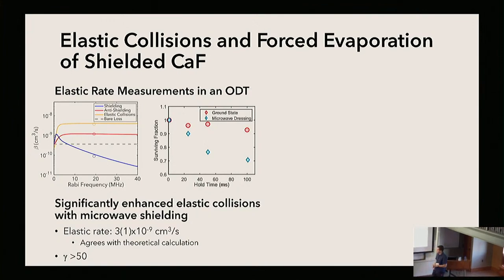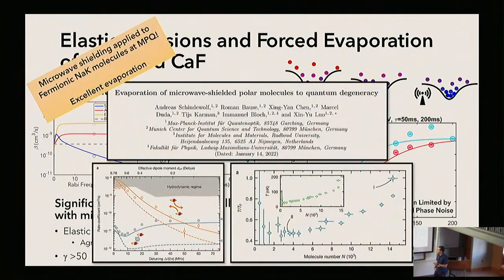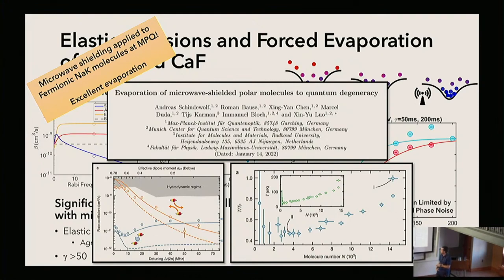This seems like a very promising platform for future evaporative cooling. We quickly tried to do evaporative cooling on this system, but only saw about a 30% decrease in temperature, limited by the dressed state lifetime issue. I want to point out some recent work by the MPQ group working on fermionic NaK, where they use the same microwave shielding scheme, and because of their much higher densities in near-degenerate NaK samples, they see very efficient evaporation and can actually evaporate to below quantum degeneracy.